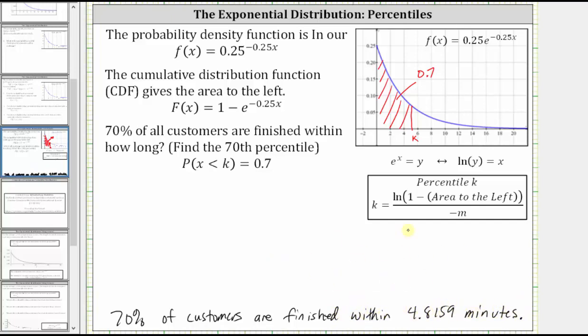Which also means 4.8159 is the 70th percentile of finishing times, meaning 70% of the finishing times are less than or equal to 4.8159 minutes.